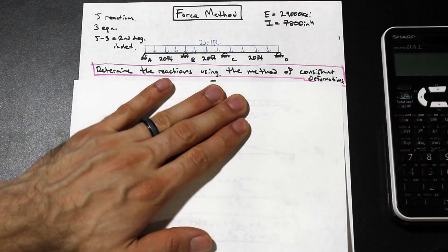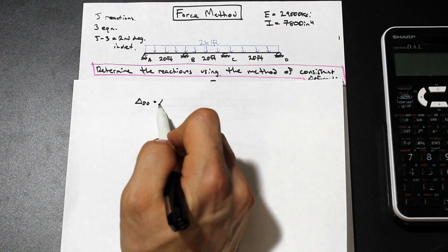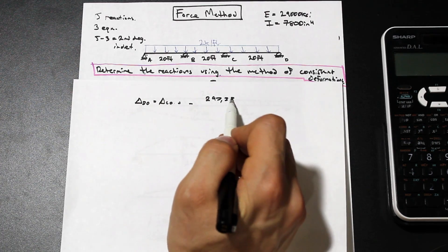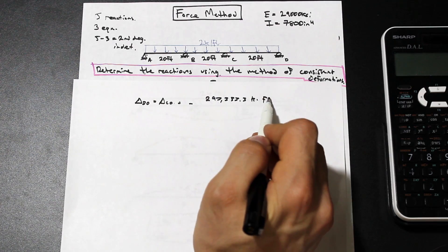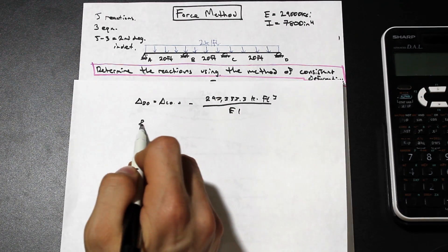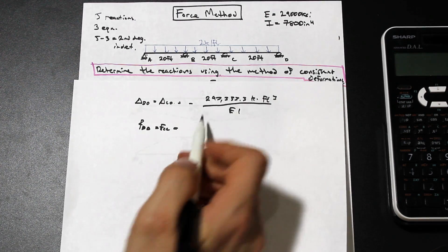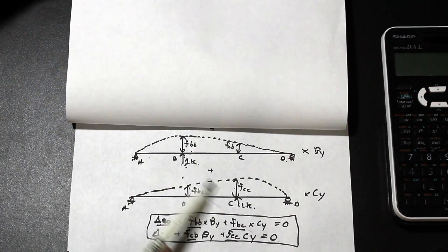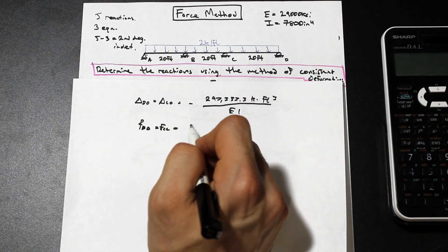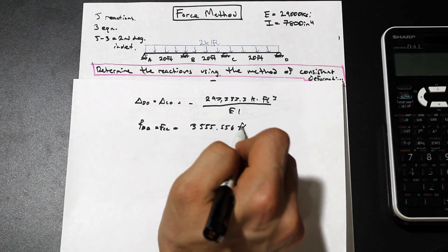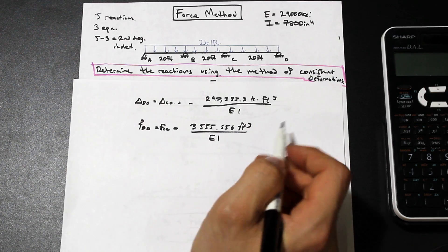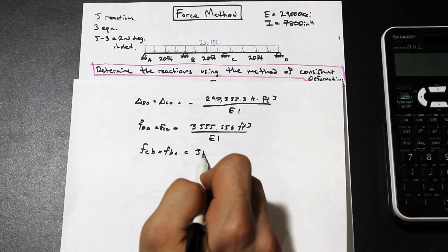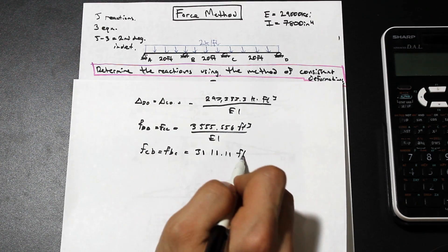So we have delta B0, which is equal actually to delta C0, and that's equal to negative, because the deflection is downwards, negative 333.3 kip feet squared over EI. We'll just leave EI in there for now. FBB is equal to FCC, and that is due to Maxwell's law of reciprocal deflections. So we have FBB equals FCC, and that is equal to 3555.556 feet cubed over EI. And FBC equals FCB, and that is equal to 3111.11 feet cubed over EI.